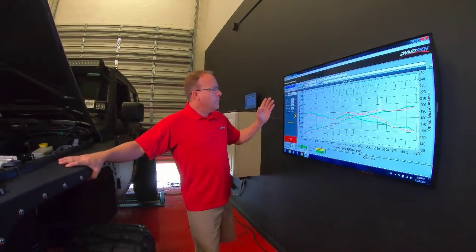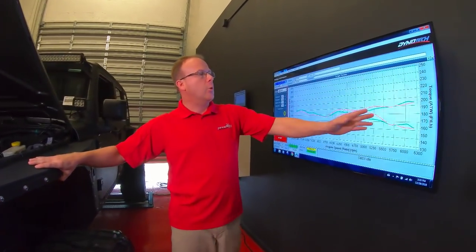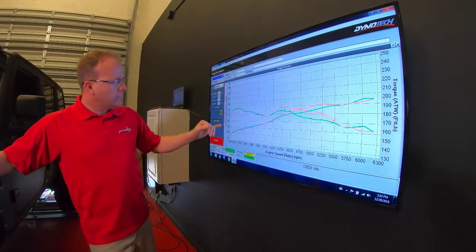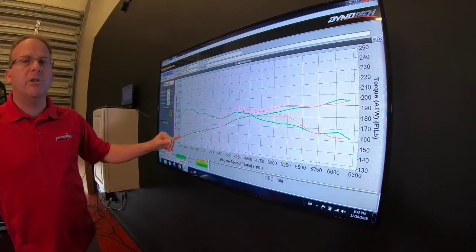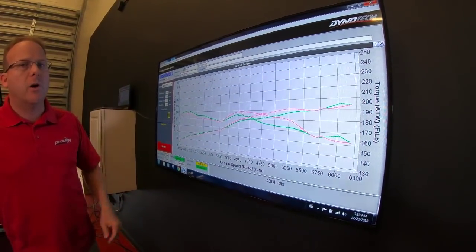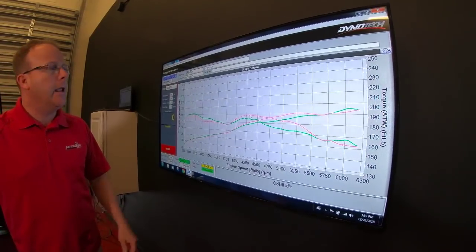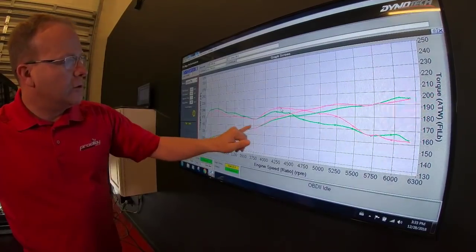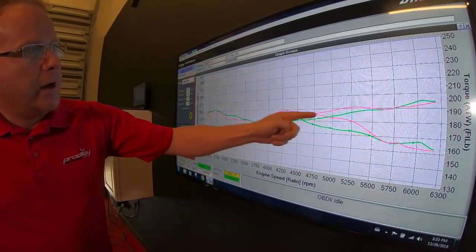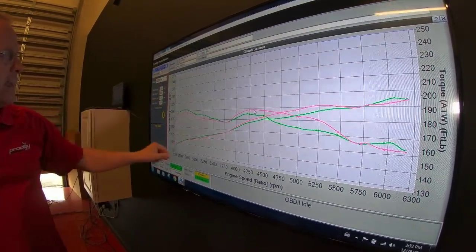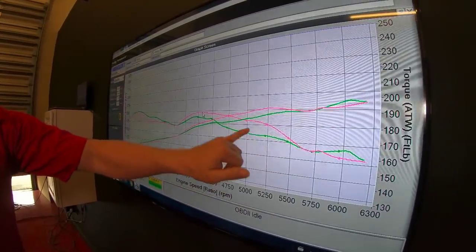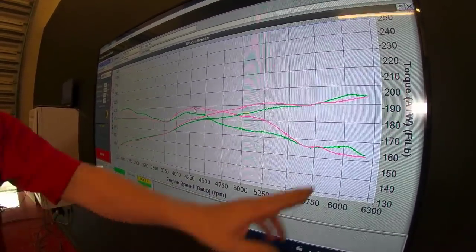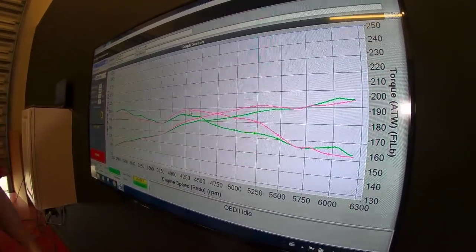Alright, so what we've got here is horsepower and torque. Our green line was the baseline we took - good run, vehicle's all stock with 321 gears. Some lines have dots, some are straight. The straight lines are horsepower from this axis, and the ones with dots are torque numbers from this axis over here.